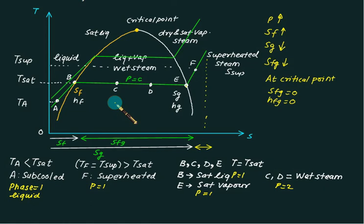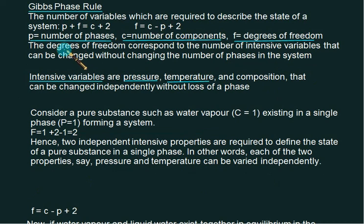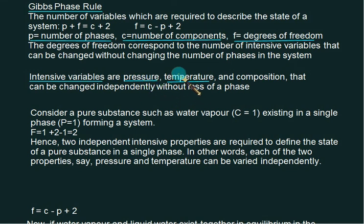For all these states the chemical composition is the same: water H2O. At the critical point, as pressure increases, HF increases, HG decreases, and HFG also decreases. Now returning to the Gibbs phase rule: F indicates the degree of freedom, P indicates the number of phases. The degree of freedom gives us the intensive variables — pressure and temperature — which are the two intensive variables used to calculate properties of steam at different conditions: subcooled, saturated liquid, superheated, or wet steam. The degree of freedom is calculated as F equals C minus P plus 2.